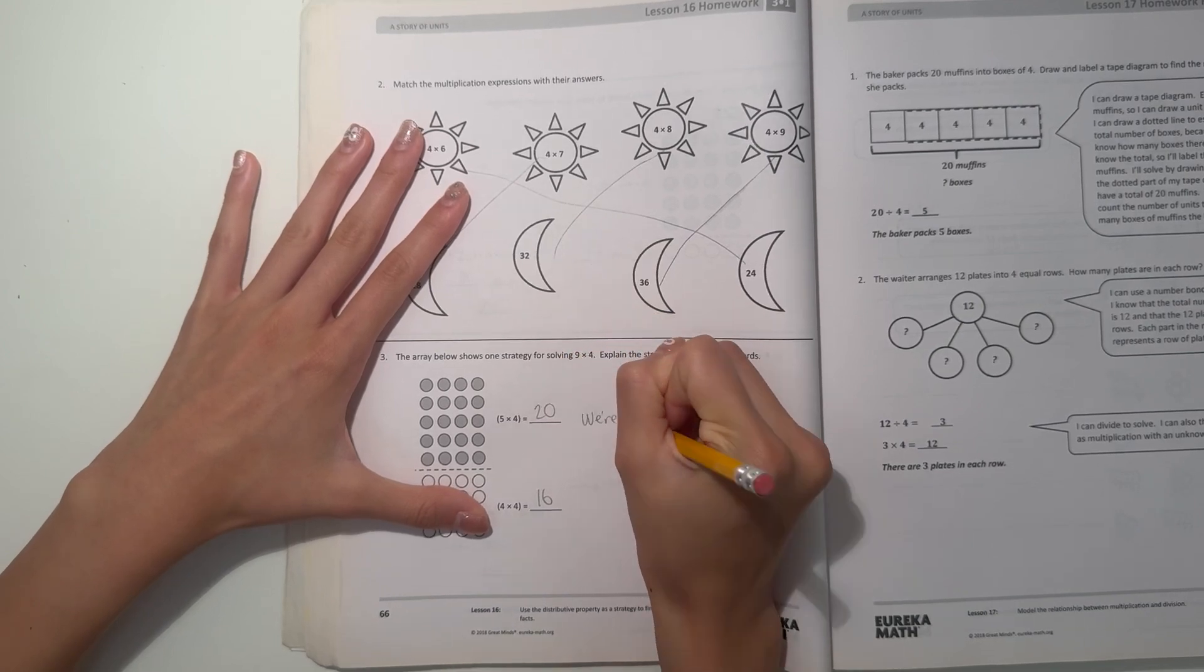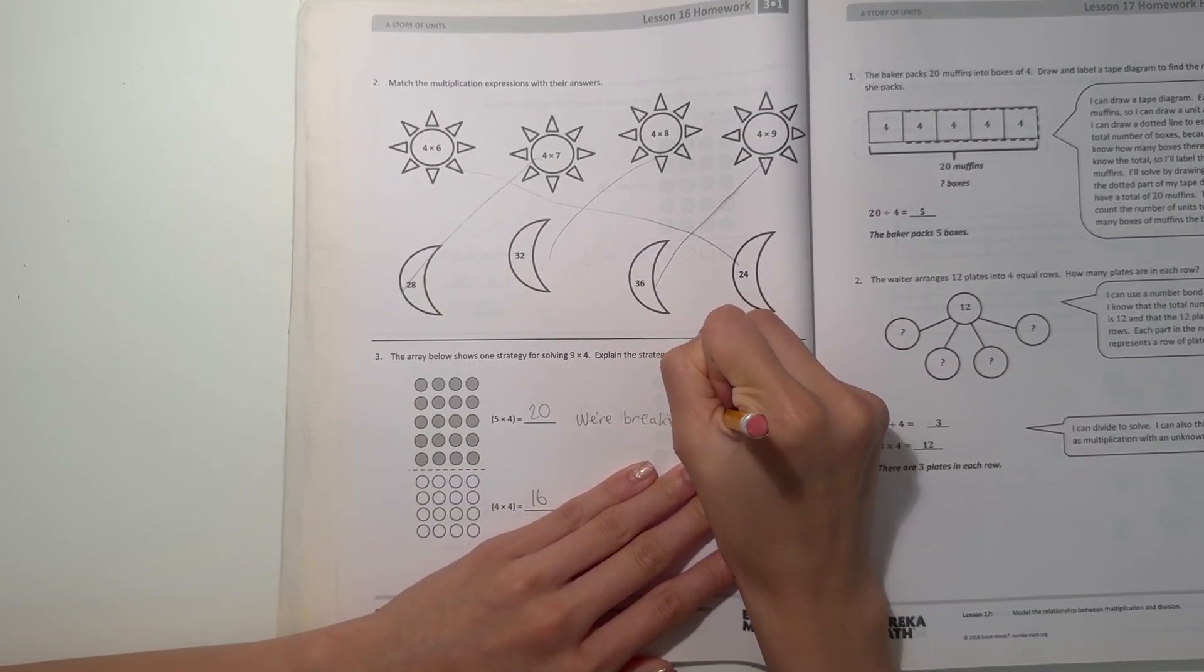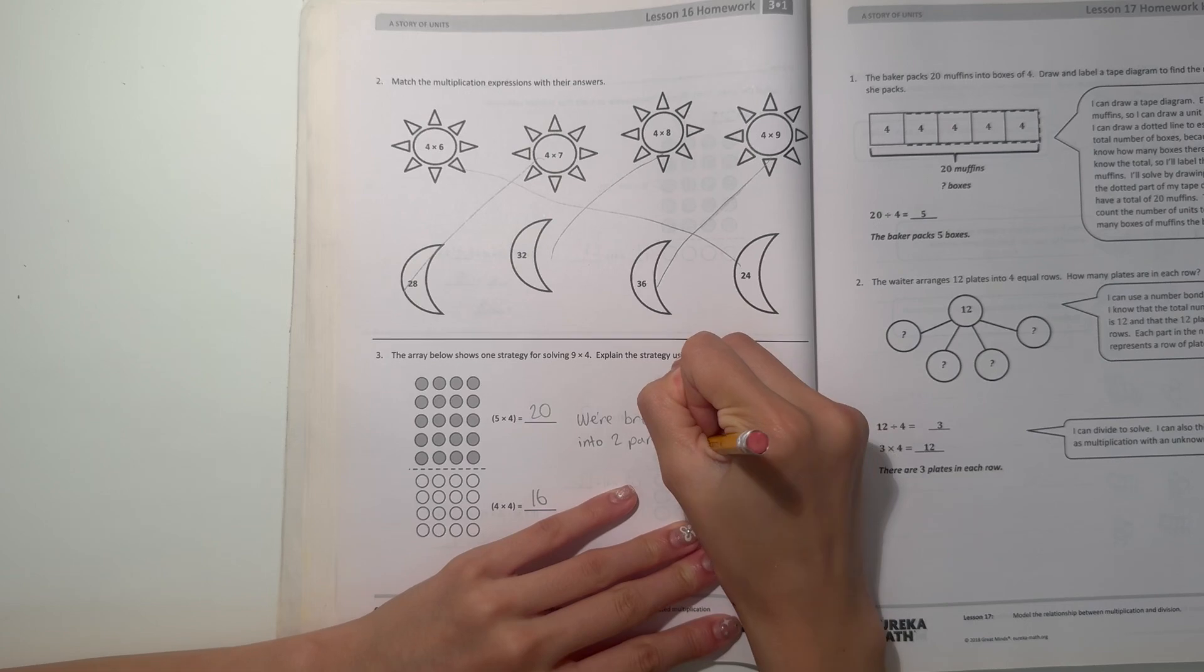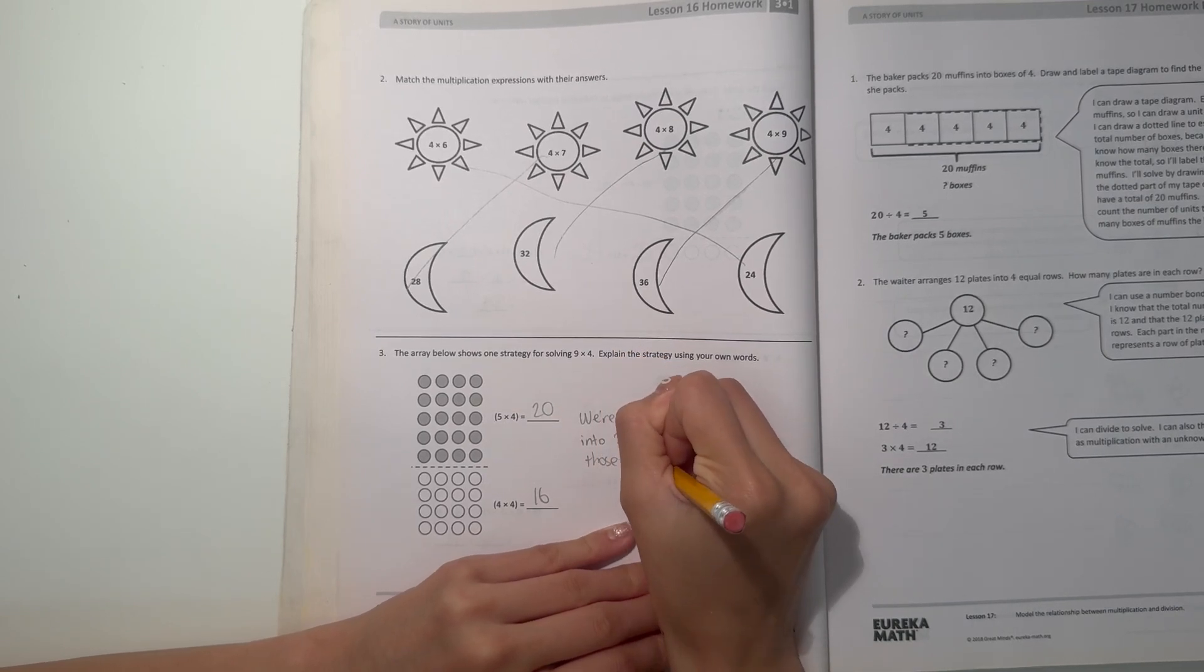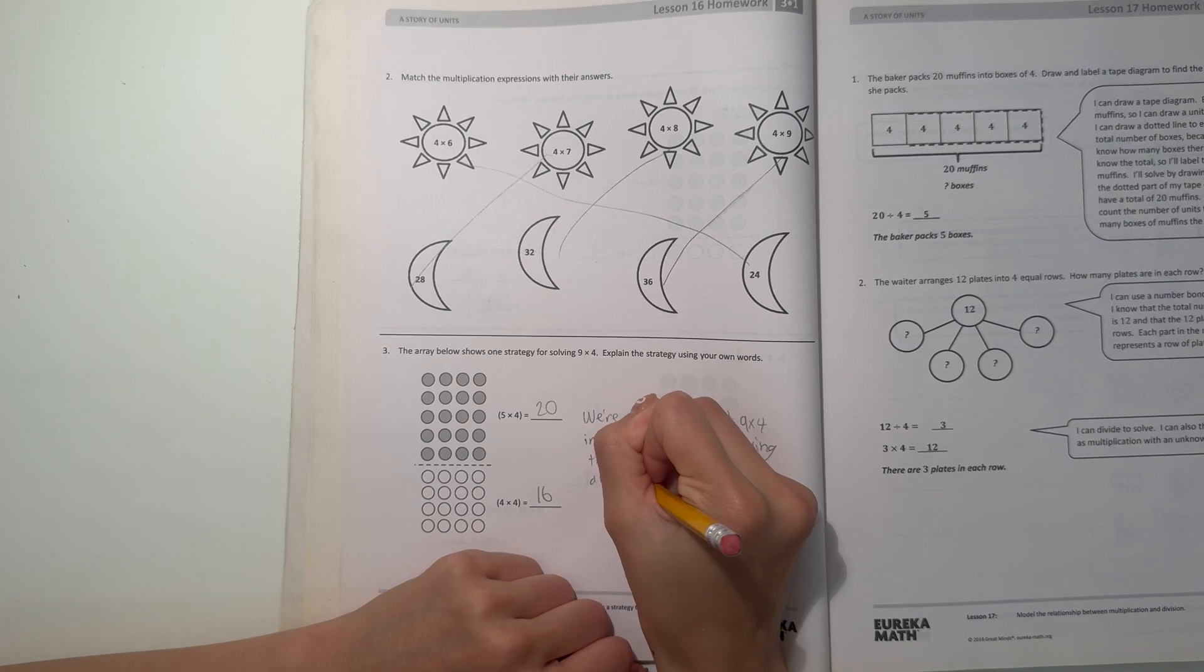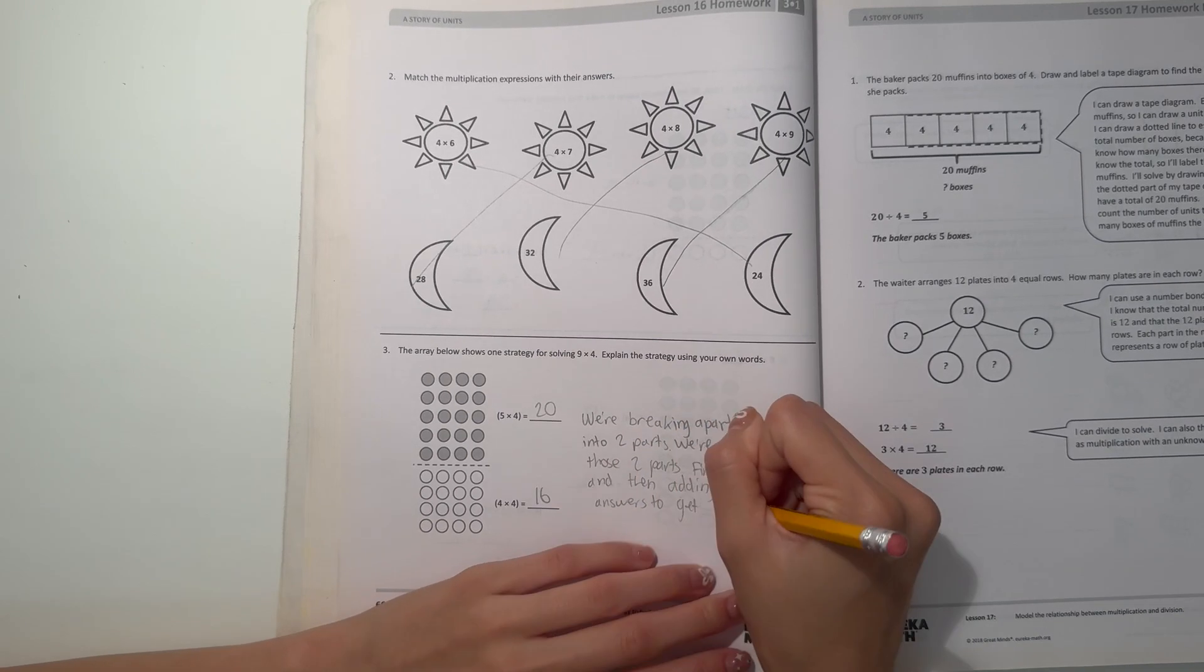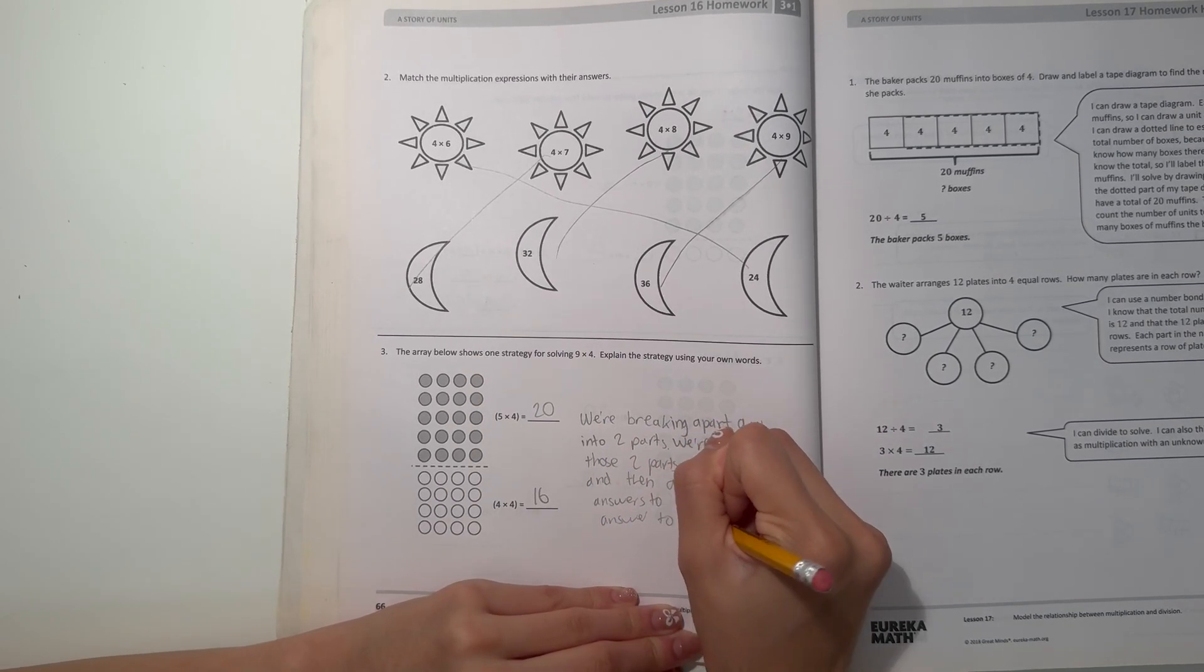So we're going to write: we're breaking apart nine times four into two parts, then we're solving those two parts first, and then adding the answer to get the answer to nine times four. So that's pretty much it.